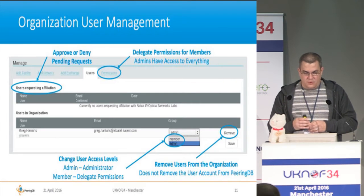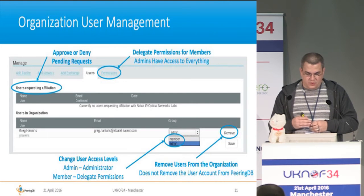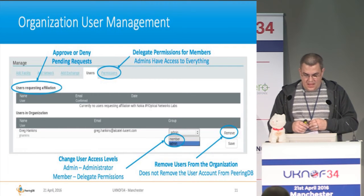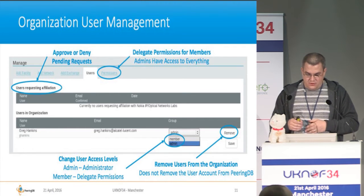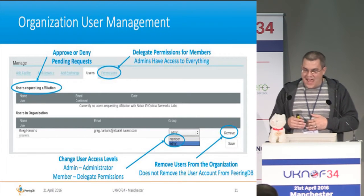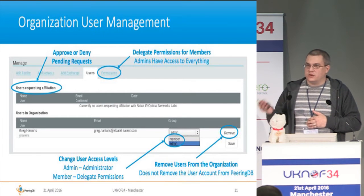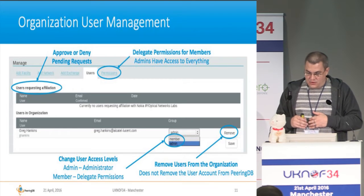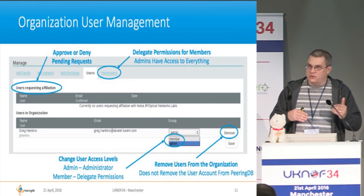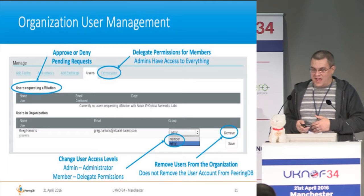Here's what the user management panel looks like. If you're an admin on the account, you'll see requests that you can approve or deny. There's also a way to change access levels for a user — you can either be an admin or a member. If you're a member, you can have specific permissions delegated. You can also remove users from the organization, which removes the user account's association — it doesn't actually remove the account from PeeringDB, as that can only be done by PeeringDB admins.